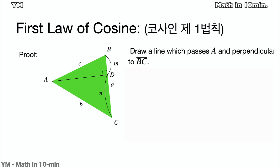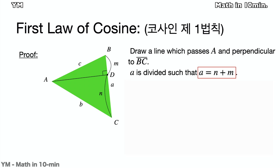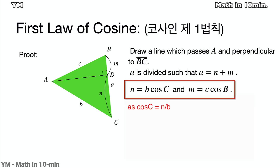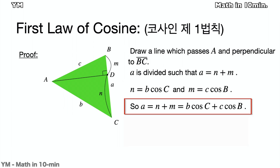To prove one of them, I will draw a line passing vertex A and perpendicular to line BC. Let the point where the two lines meet be D, the length of line BD be M, and the length of line CD be N. Then we get A equals N plus M. Meanwhile, N equals B times cosine C and M equals C times cosine B. So A, which is N plus M, is also equal to B times cosine C plus C times cosine B.